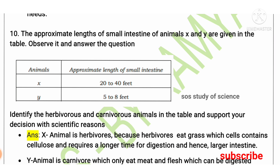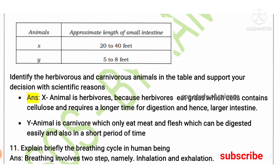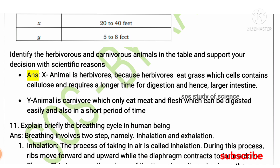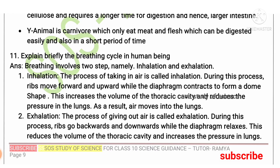So animal X is the herbivore and animal Y is the carnivore. Animal X completely depends on plants; plant products contain cellulose, and digestion of cellulose takes more time, so food stays in the small intestine for a longer period. Animal Y is a carnivore depending on meat, and digestion of meat does not take as long compared to herbivores.